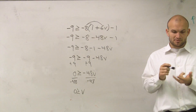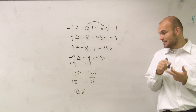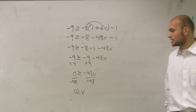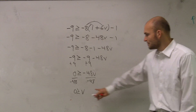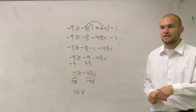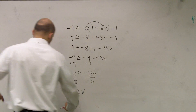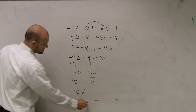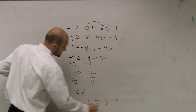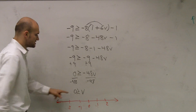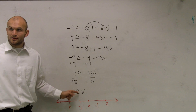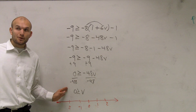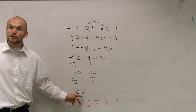So remember, I told you guys how to do the test points. Test points are very helpful, especially when you have your variable to the right, because a lot of you will make mistakes — you'll remember that with the inequality sign, you just put the graph going that direction. But we have to be careful, so let's draw a number line. What I always like to do is say the inequality out loud. This says 0 is greater than or equal to v, or if I say it backwards, v is less than or equal to 0.